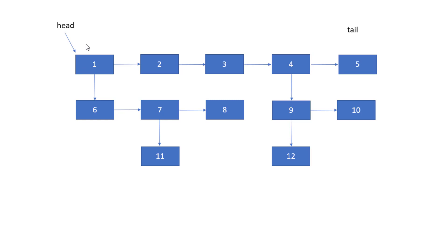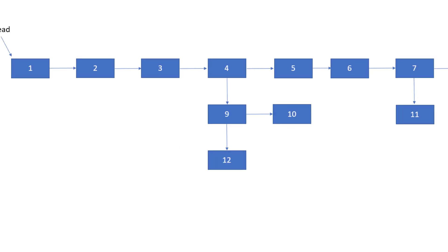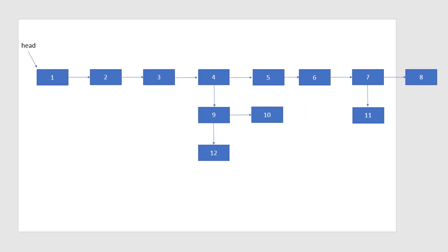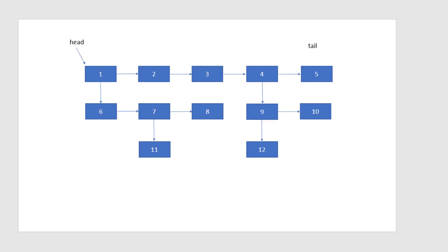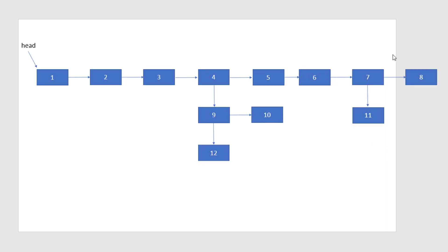Next, we start from the head node again and check whether each element has a child node. If it does, we append the child list by setting the tail's next to that child node. So for the first node, which has a child, we append that complete child list after node 5. After appending, we also need to update the tail, since the list has grown — we iterate again until next is null to find the new tail.